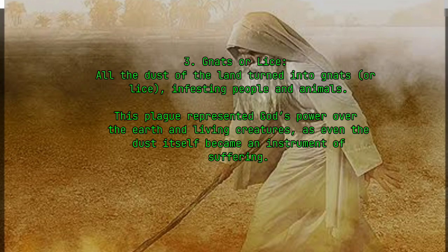3. Gnats or lice. All the dust of the land turned into gnats or lice, infesting people and animals. This plague represented God's power over the earth and living creatures, as even the dust itself became an instrument of suffering.